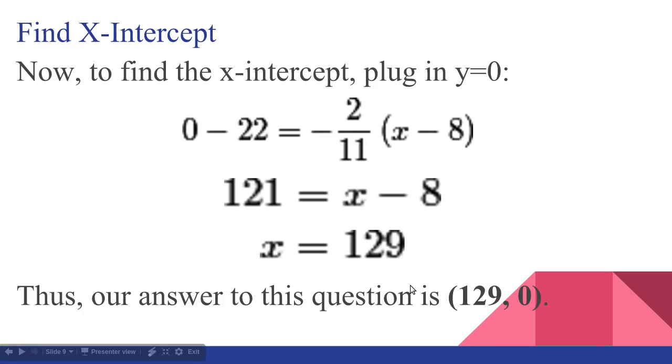The big point of this problem is to make sure, the common mistake would be to make sure that you write (129,0) in parentheses, like an ordered pair, instead of just X equals 129. Because the X-intercept is a point, not just a number. So it's not just 129, it's (129,0). So that's a big mistake that you want to avoid.